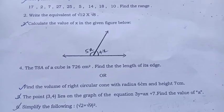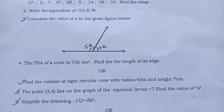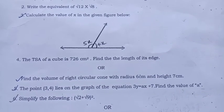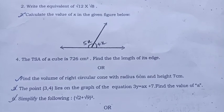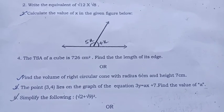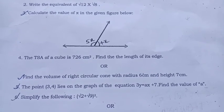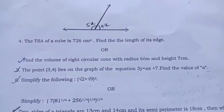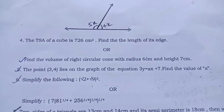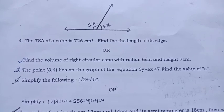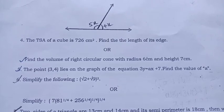Or find the volume of right circular cone with radius 6 cm and height 7 cm. The point 3,4 lies on the graph of equation 3Y equal to AX plus 7. Find the value of A. Simplify the following: square root 2 plus square root 9 bracket square or simplify. See here it is very complicated bracket. 81 raised to half,